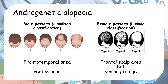I won't go into detail about each classification, but looking at the pictures you can see the distribution of hair loss. In male pattern hair loss, hair loss focuses on the frontal temporal area and the vertex area. In female pattern hair loss, the hair loss occurs in the frontal scalp region but interestingly spares the fringe area at the front.